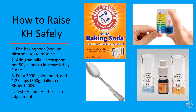If your KH is too low, raising it safely is simple. Baking soda, or sodium bicarbonate, is an effective solution. Add it gradually — one teaspoon per 50 gallons of pond water will raise KH by 1 dKH.